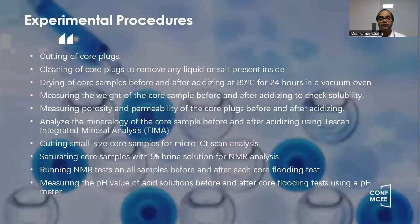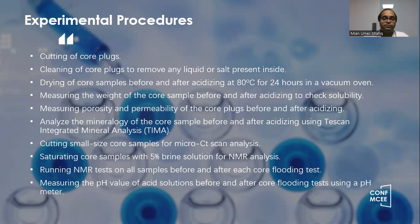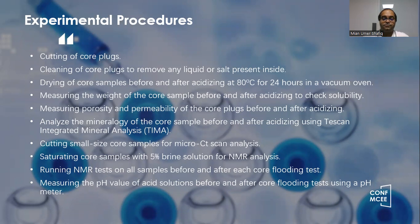In the experimental procedure, we cut the core sample, we clean the core sample, we dry the core sample, and then measure the weight of the core sample before and after acidizing, measure the porosity and permeability of the rock sample before and after acidizing, find the mineralogy of the core sample before and after acidizing, cut the core sample for micro CT scan analysis, and saturate the core sample for NMR analysis.